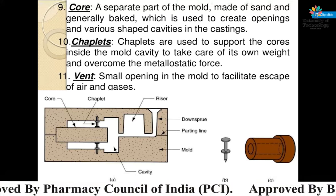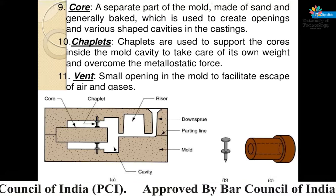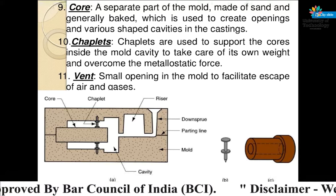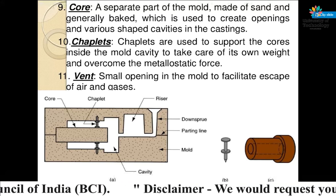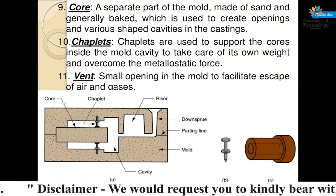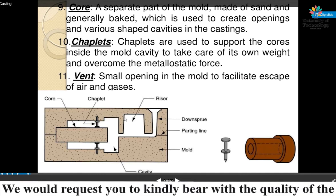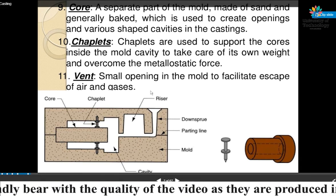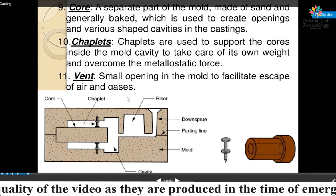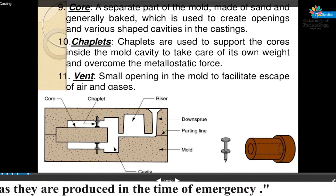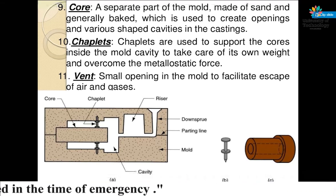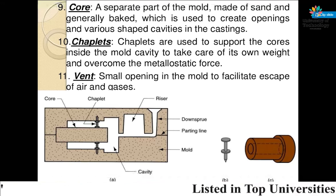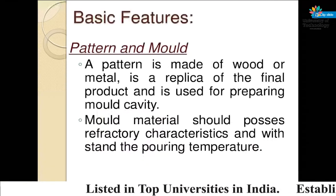Vent — a small opening in the mold to facilitate escaping of air and gases. These vertical holes are known as vents, for releasing the hot gases during filling of the molten metal in the casting cavity.